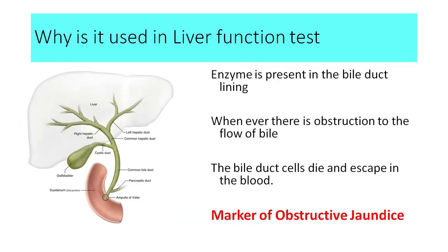Why is alkaline phosphatase used as a liver function test? The major location where alkaline phosphatase is present is all along the bile tree. Whenever there is any obstruction of the bile duct, the pressure in the bile duct increases, destroying the cells lining the bile tree. When those cells die, the alkaline phosphatase is released into the blood and its levels increase. Therefore, alkaline phosphatase is a marker of obstructive jaundice — a marker of obstruction in the flow of bile from the liver to the intestines.